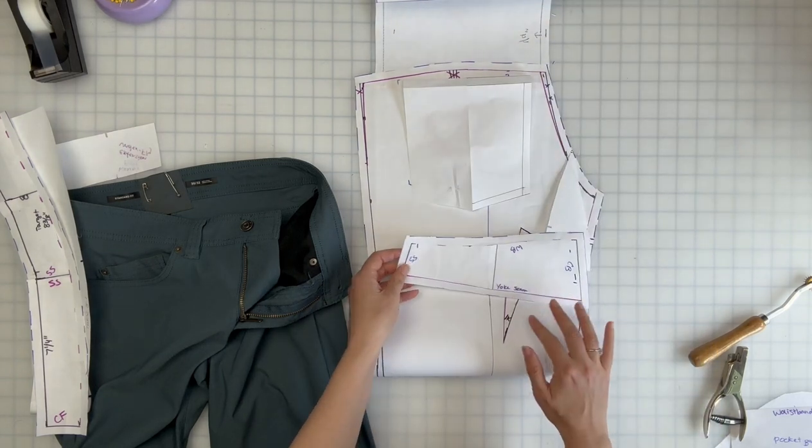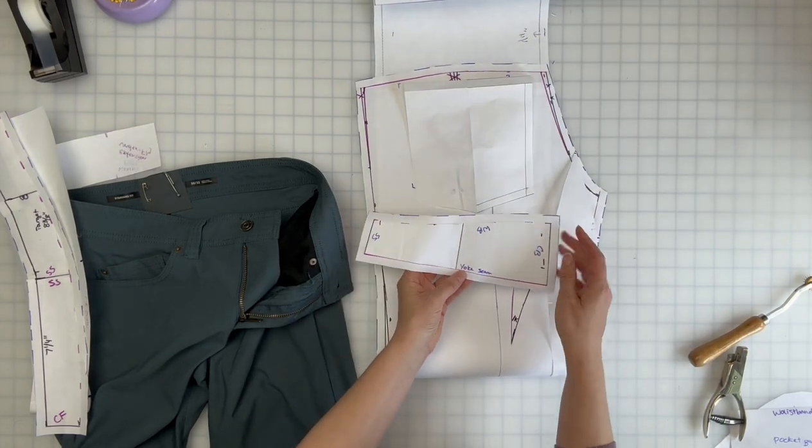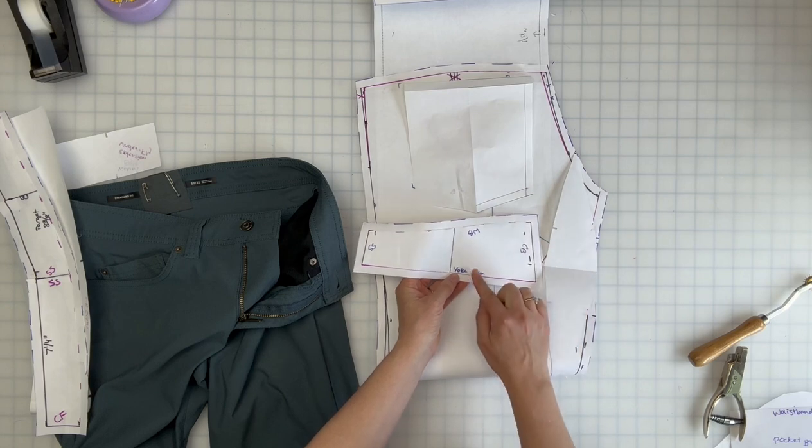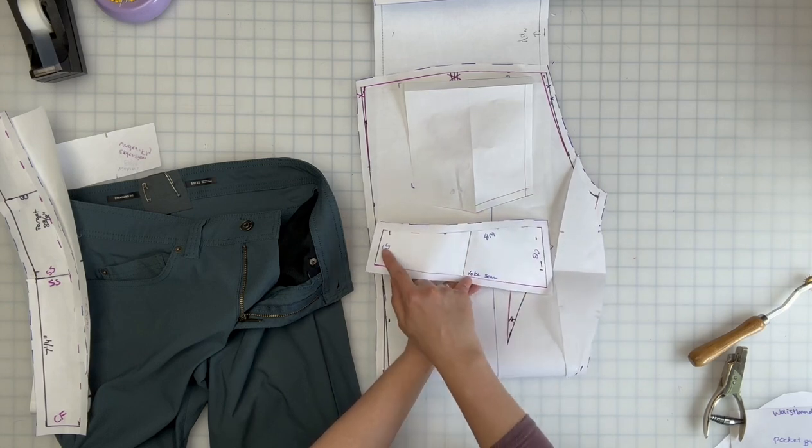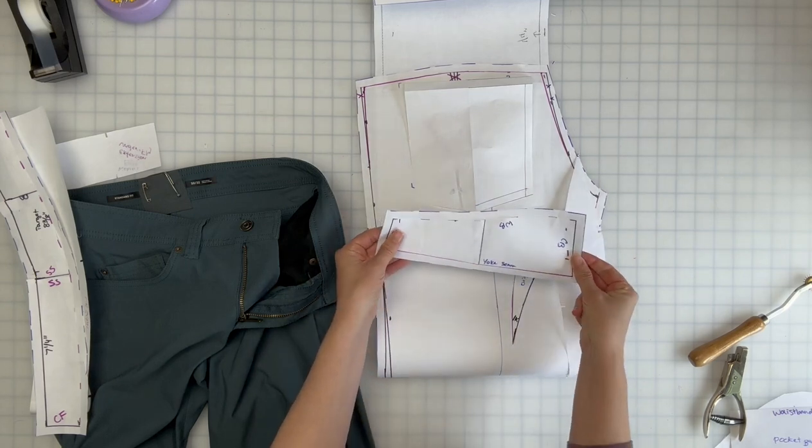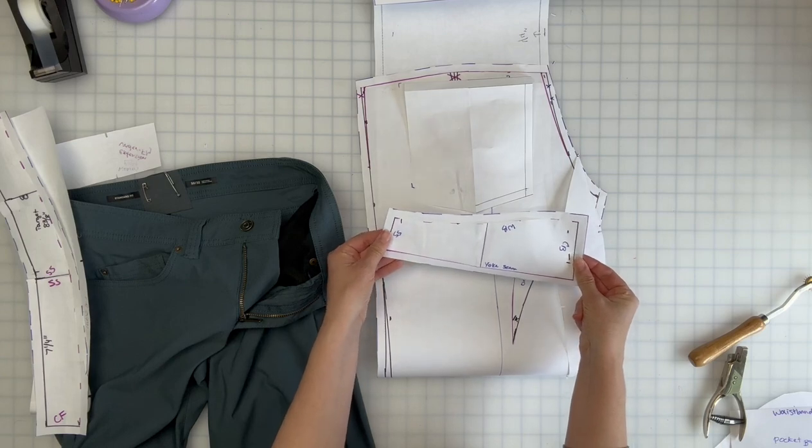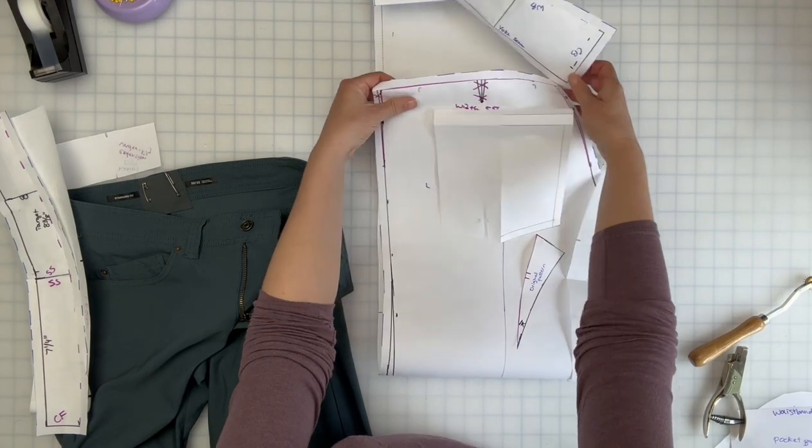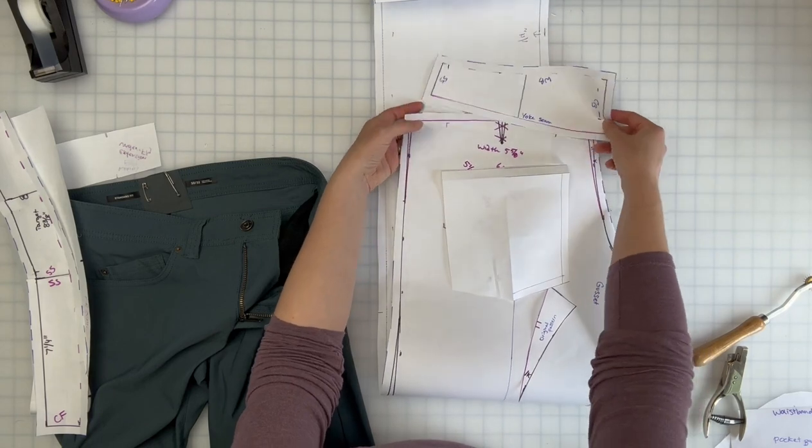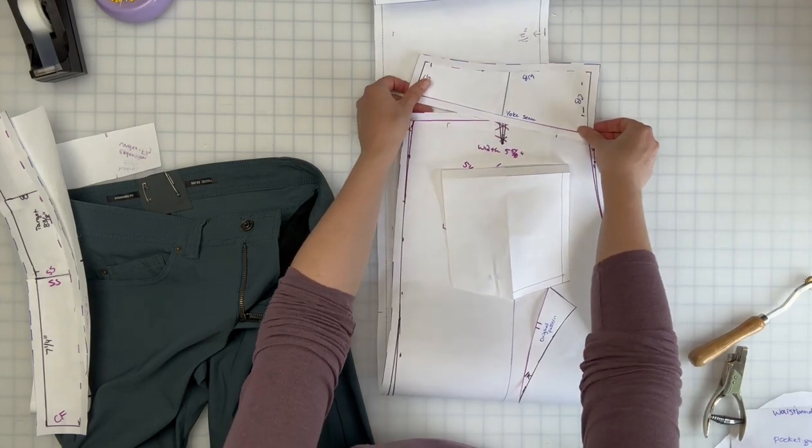Then I did not make any major updates to the yoke, but I did write down my center back, my yoke seam, waistband seam, and side seam, because when we're sewing that in, that is very important that we're sewing in the correct positions to that actual yoke seam here so that it fits together.